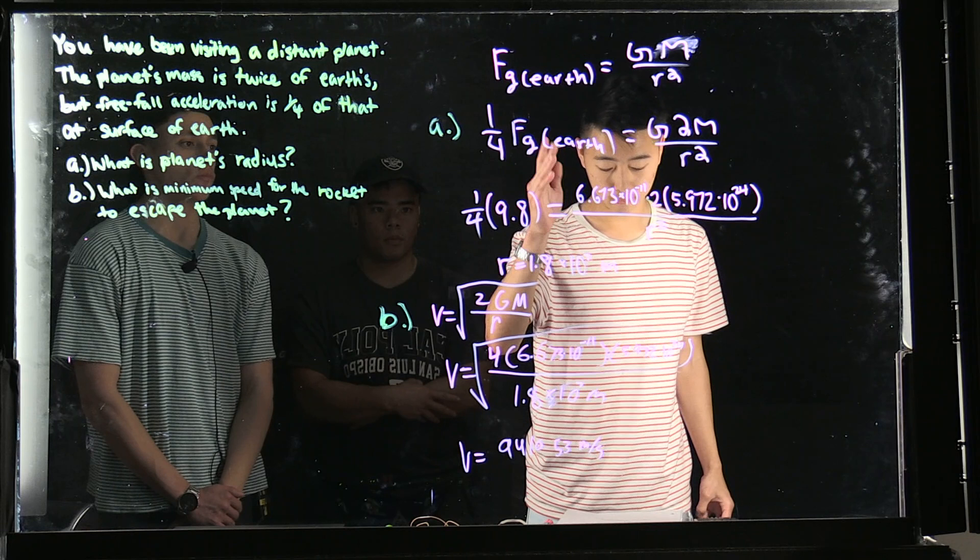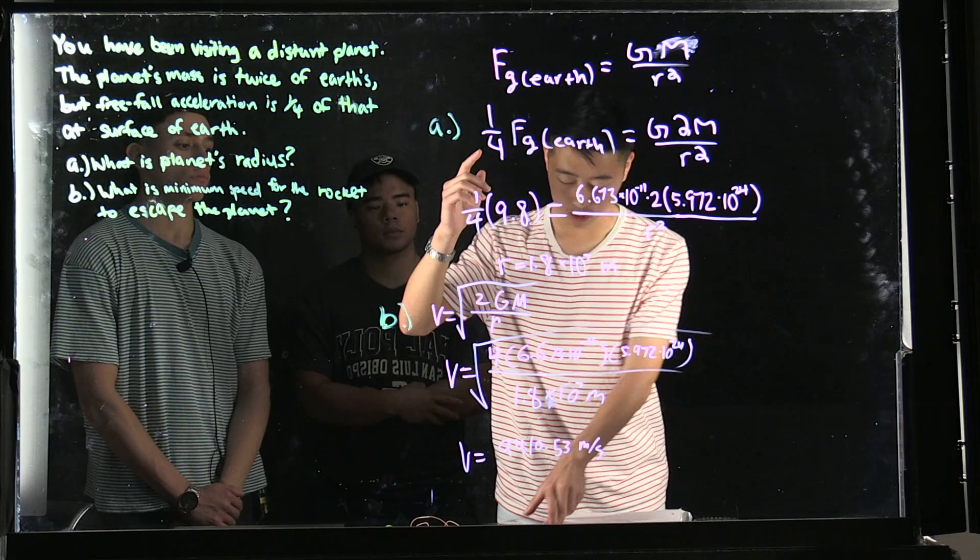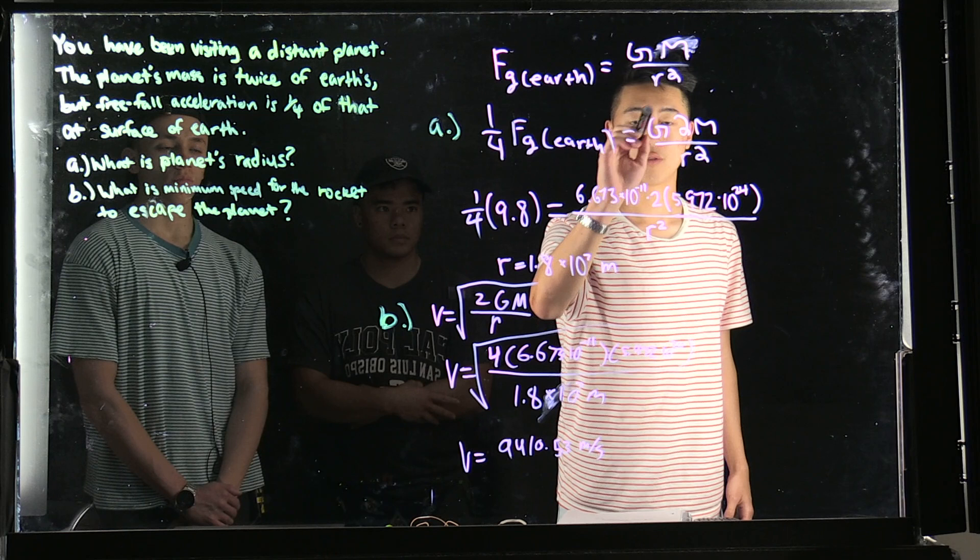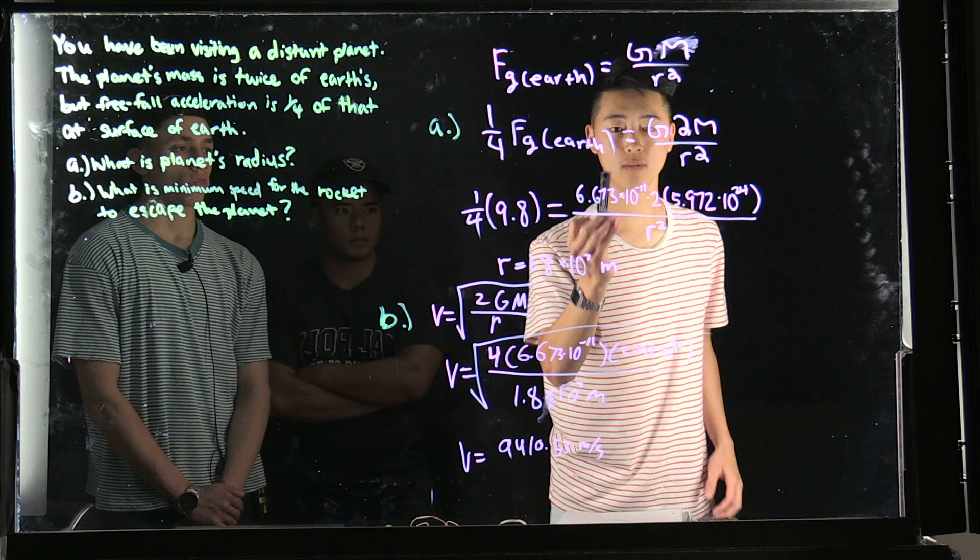So what we have here is the universal law of gravitation. We multiply the gravitational force of Earth by one-fourth because the planet's freefall acceleration is one-fourth of that on Earth's surface. This is the gravitational constant, which is 6.673 × 10⁻¹¹.